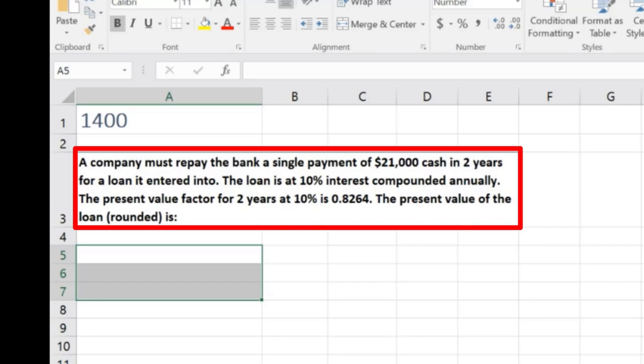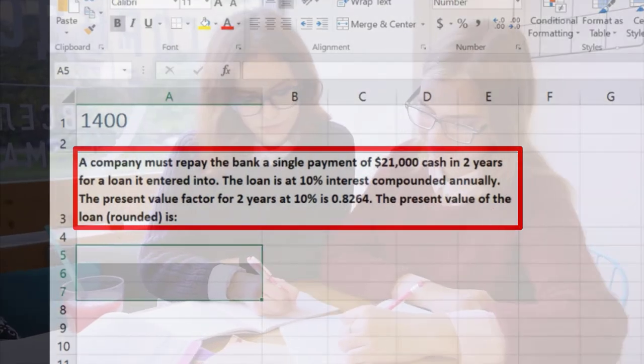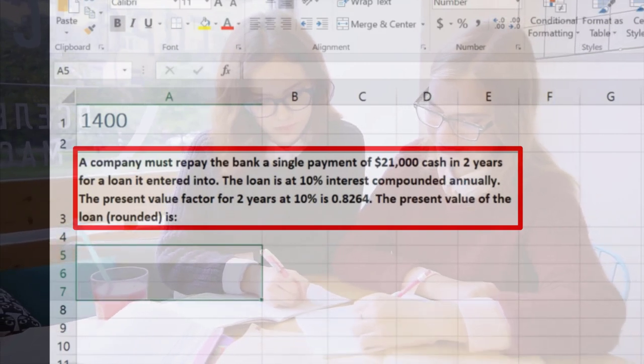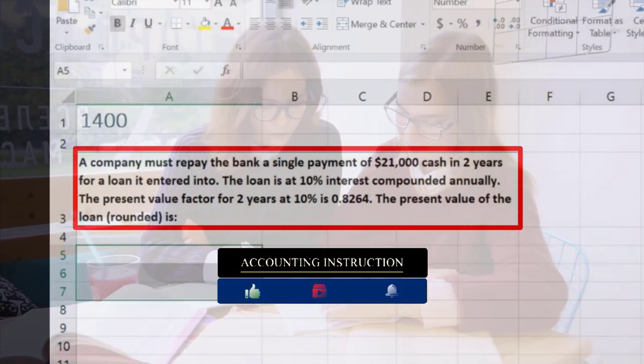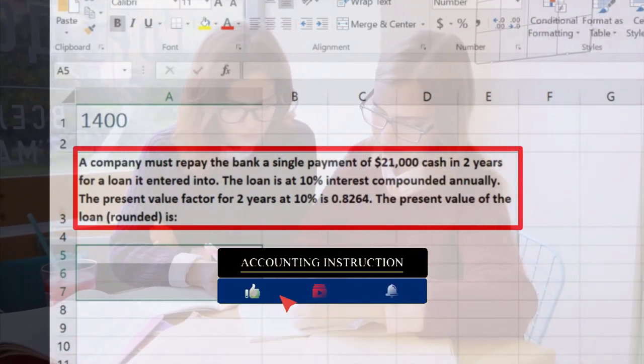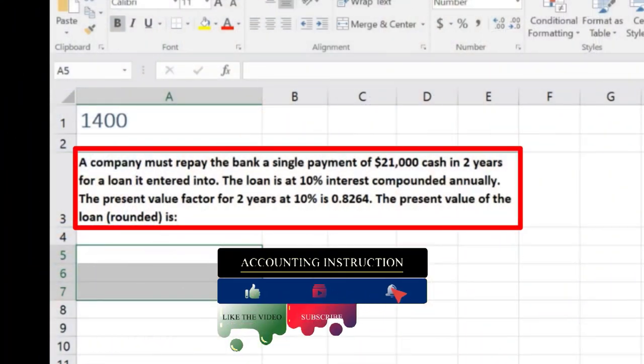in two years for a loan it entered into. The loan is at 10% interest compounded annually. The present value factor for two years at 10% is 0.8264. The present value of the loan is what? So we have